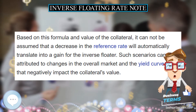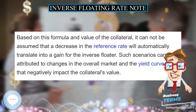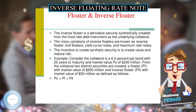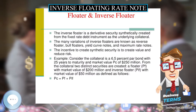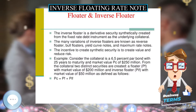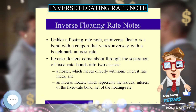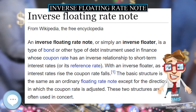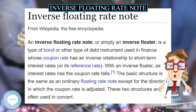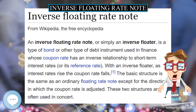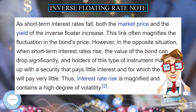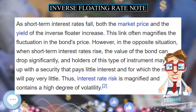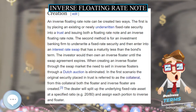In the first scenario, the original security placed in trust is referred to as the collateral. From this collateral, both the floater and inverse floater are created. The dealer will split up the underlying fixed-rate asset at a specified ratio — for example, 20/80 — and assign each portion to the inverse and floater. The reference rate and the frequency at which the rate is reset are contractually set. The rate used is often some form of LIBOR.